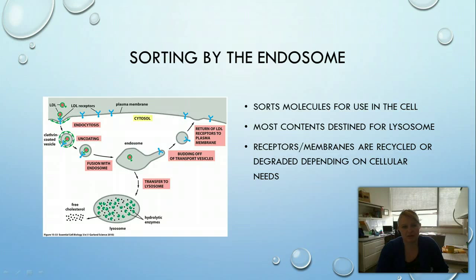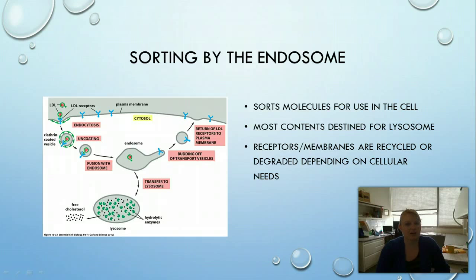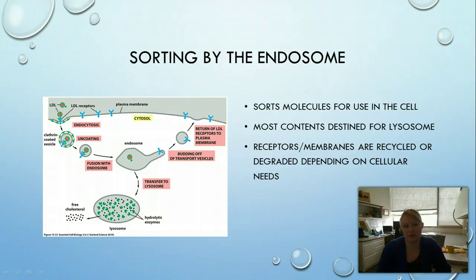Most of the contents brought in through endocytosis are going to go to the lysosome. The receptors in the membrane are recycled or degraded depending on the needs of the cell — if a large amount of a specific molecule was needed and now isn't, the receptors will be recycled; if the molecule is needed continually, those receptors will be sent back to the membrane; if they're not needed again, they'll be degraded.